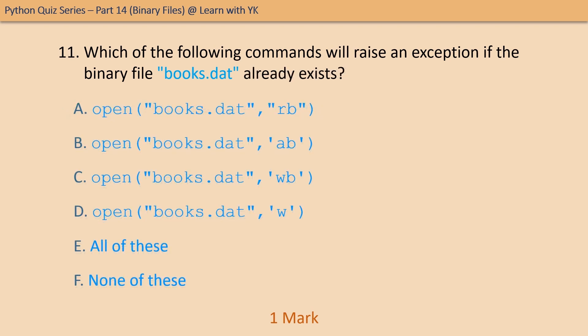Question number eleven: which of the following commands will raise an exception if the binary file books.dat already exists? Pick the correct option. The correct option is option F — none of these. If a file already exists, it can be opened in any mode.